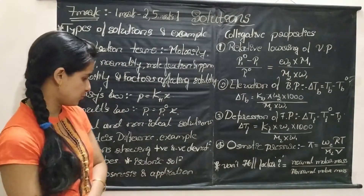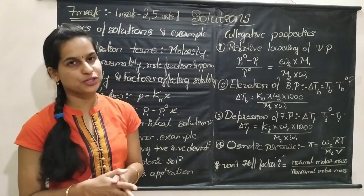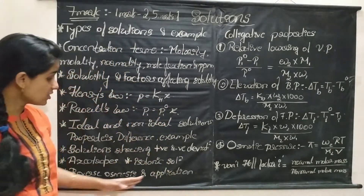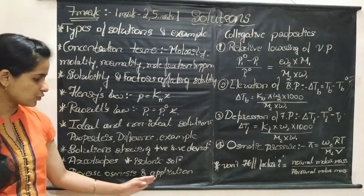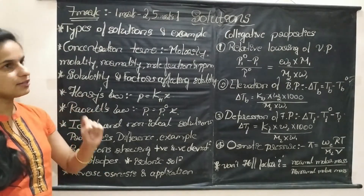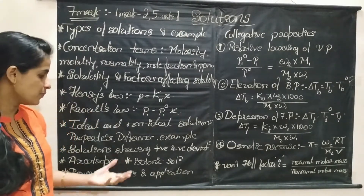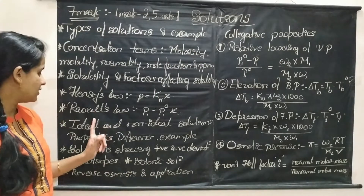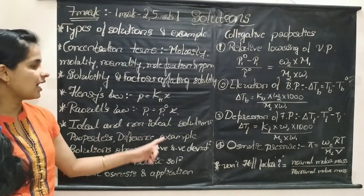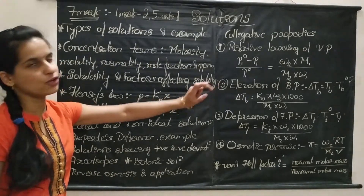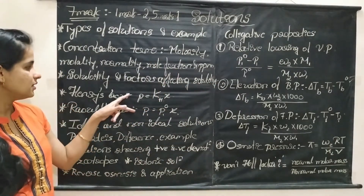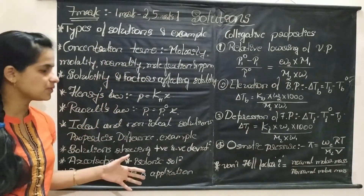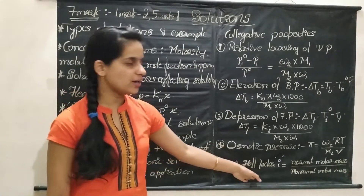Then, isotonic solutions: solutions having the same osmotic pressure at a given temperature are called isotonic solutions. Then, reverse osmosis and its application — an important question. For a 2-mark question, you may be asked to define reverse osmosis and write an application. Then, the difference between ideal and non-ideal solution, and factors affecting solubility — these are very important concepts. And another very important concept is the Van't Hoff factor.